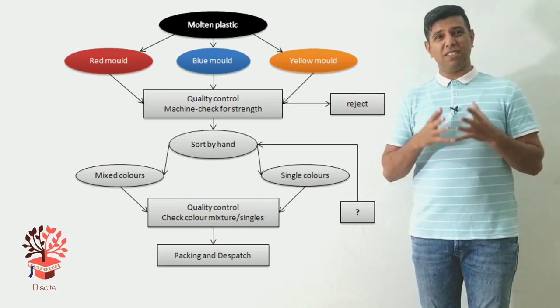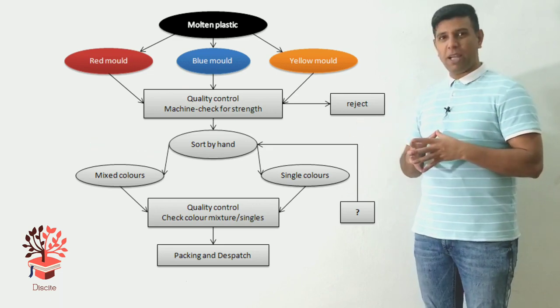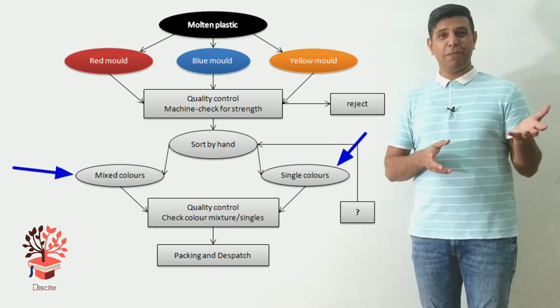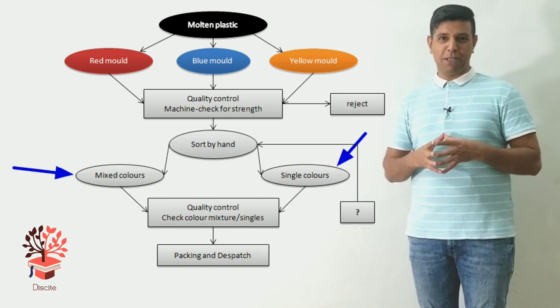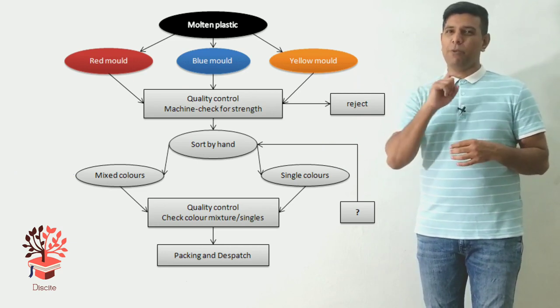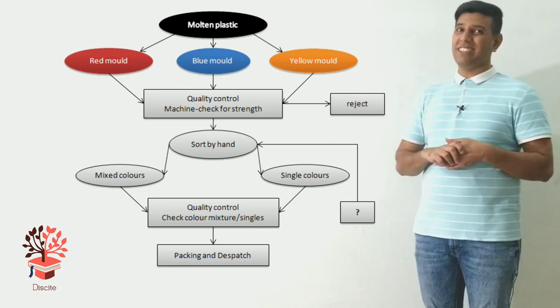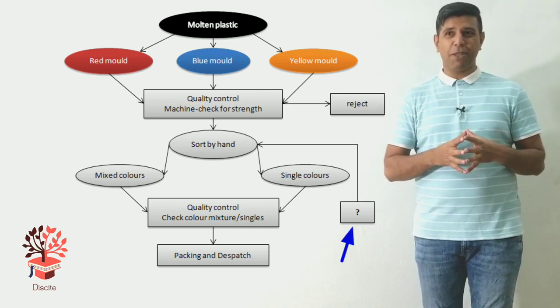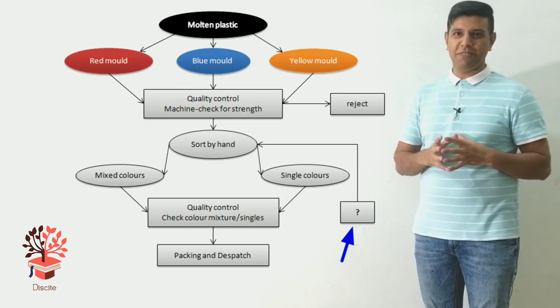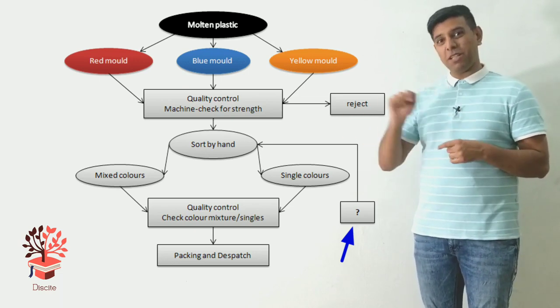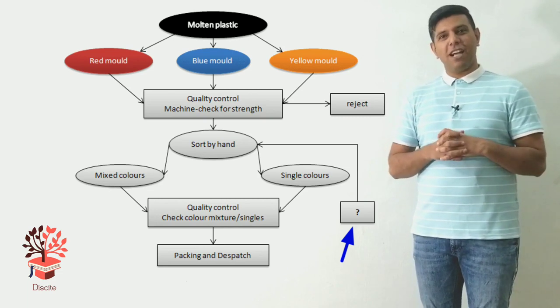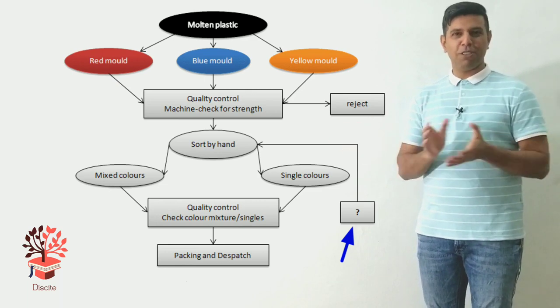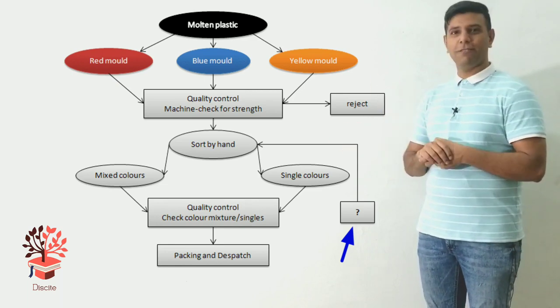After the quality control, what happens? Sort by hand. So what is sorting by hand? You sort things into their places, into mixed colour paperclips and single colour paperclips. And then you see, with the sort by hand, there is a question mark. We don't need to worry about everything that's given there. I'll leave it to you guys. What does this question mark mean? But I'll just ignore that. There's no point talking about each and every point in the flowchart.